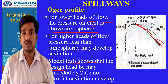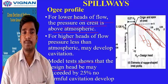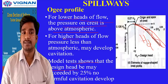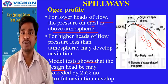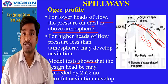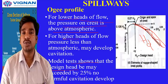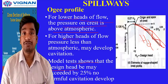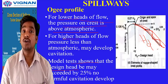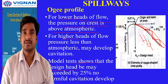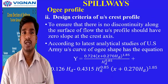Model tests show that whatever the design head Hd the Ogee spillway is designed for, the design head may be exceeded by up to 25 percent without causing cavitation. If the actual head exceeds the design head by more than 25 percent, cavitation problems will arise.